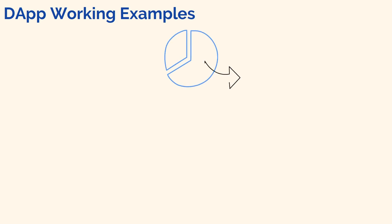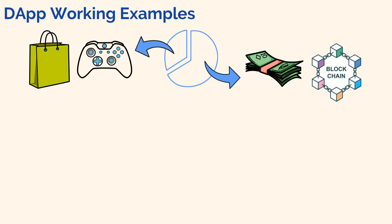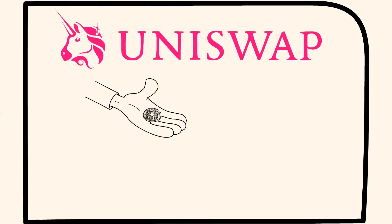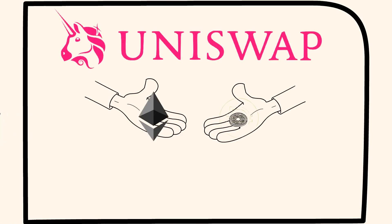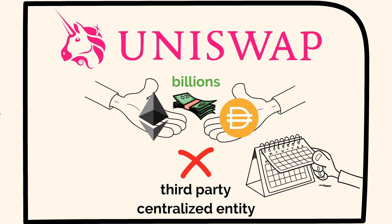Here are some real-world examples of dApps. A huge portion of dApps these days are mostly used to conduct financial transactions on the blockchain. There are, however, apps in gaming, shopping, and other categories too. Nevertheless, one of the most popular dApps in the crypto and decentralized finance world is named Uniswap. This app allows users to directly swap one crypto for another without going through any third-party or centralized entity. Thanks to this, billions of dollars' worth of swaps are performed on Uniswap each day.